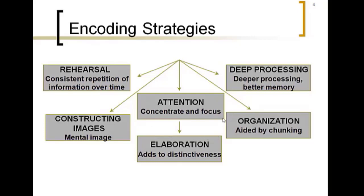Elaboration kind of goes along with deep processing. Basically, anything that you do with the information will make it easier to remember. One thing you can do is elaborate on it — come up with your own specific examples. When I start talking about different types of memory, think about memories you have that fall into the different categories. You'll remember your own examples a lot better than you'll remember mine. Make specific bits of information more distinctive with your own personal thoughts, opinions, and examples.